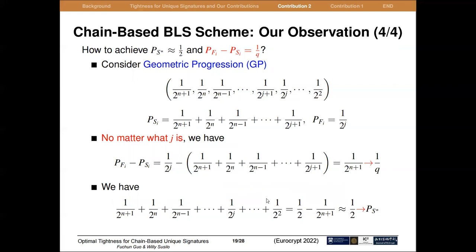We found this can be achieved with geometric progression. Suppose P_{f,i} equals 1/2^j, and P_{s,i} equals the sum of all values on the left side of 1/2^j. Then no matter what j is, the gap between P_{f,i} and P_{s,i} is always equal to 1/2^{n+1}. We can set this value very close to 1/q, and the sum of all values is close and no more than 1/2.